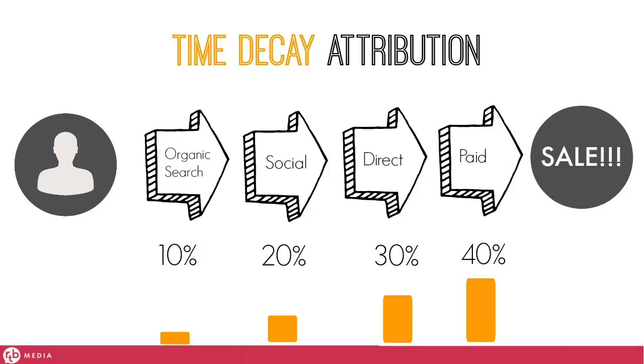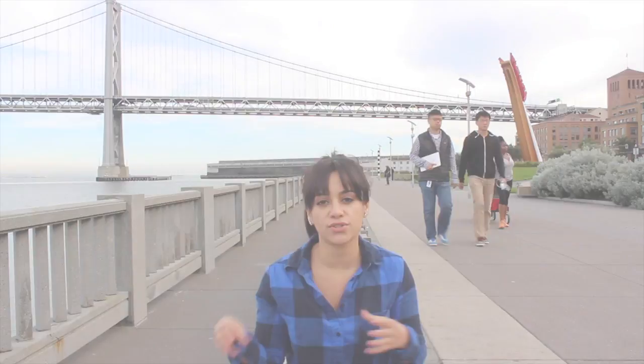Lastly, I want to cover the time decay attribution model — probably my favorite for novice to intermediate marketers. It puts the most value on the last source that drove the conversion, then gradually decreases value across the other sources back to the first click. What I think you can learn from this model is that you can eventually fine-tune it to develop your own customized attribution model and define different values to different sources.